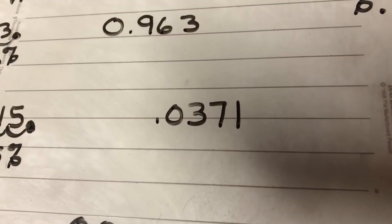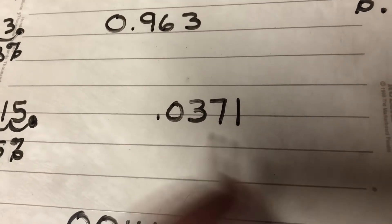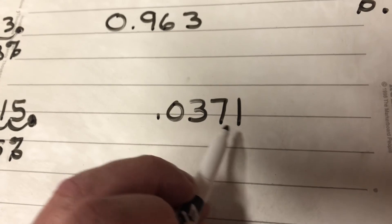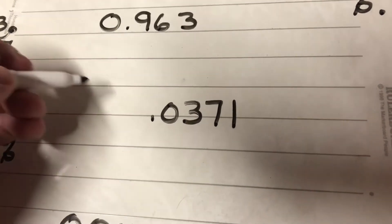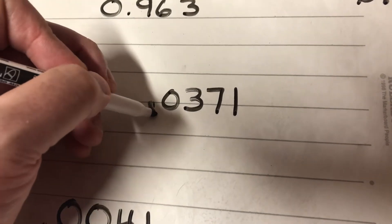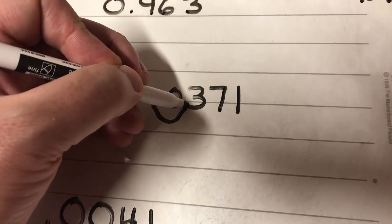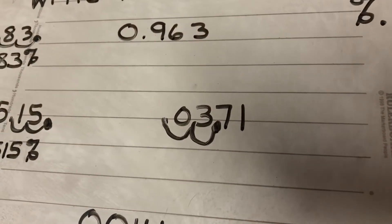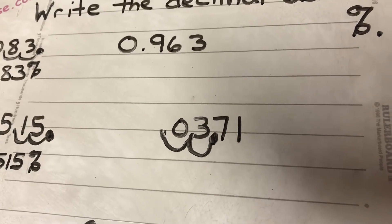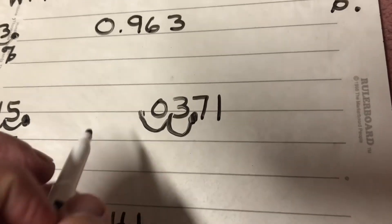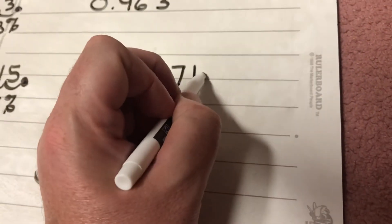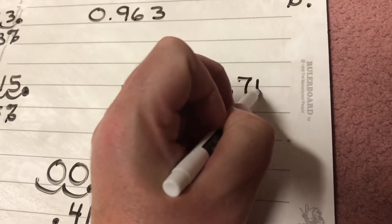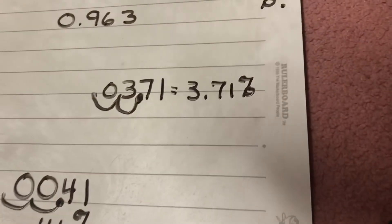Here I have 371 ten-thousandths. Remember: tenths, hundredths, thousandths, ten-thousandths. I'm going to multiply by a hundred, which means I move the decimal twice to the right. I get 3.71 — three and 71 hundredths, so the answer is 3 and 71 hundredths of a percent.